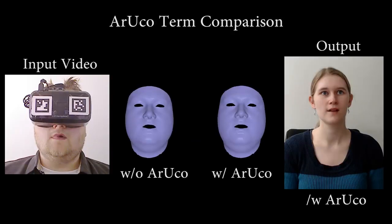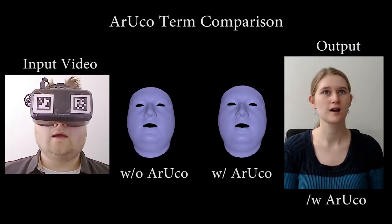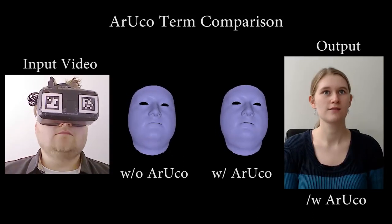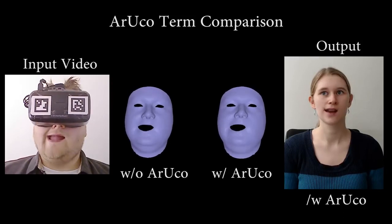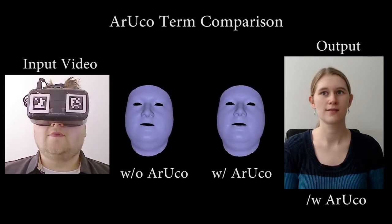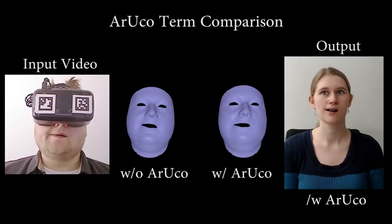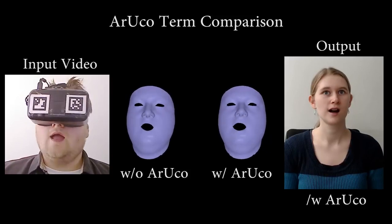To robustly track the lower part of the source actor's face, we use the Oruko AR marker to better constrain the rigid head pose. This way, we can easily track strong head motions of the source actor, as shown on the right.